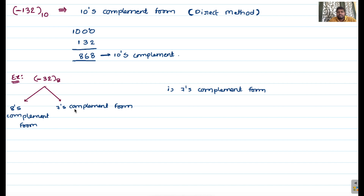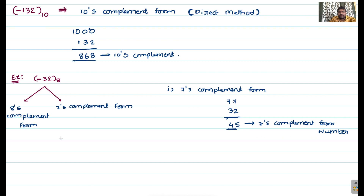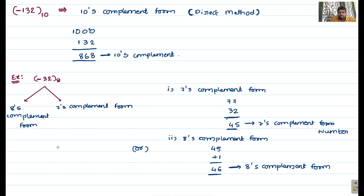For the octal system, 8's complement is the r's complement and 7's complement is the r-minus-1's complement where r equals 8. To find the 7's complement of 32, subtract 32 from all 7's: 77 minus 32. 7 minus 2 is 5, 7 minus 3 is 4, giving 45. That is your 7's complement. To get the 8's complement, add plus 1: 45 plus 1 equals 46. So 46 is your 8's complement.